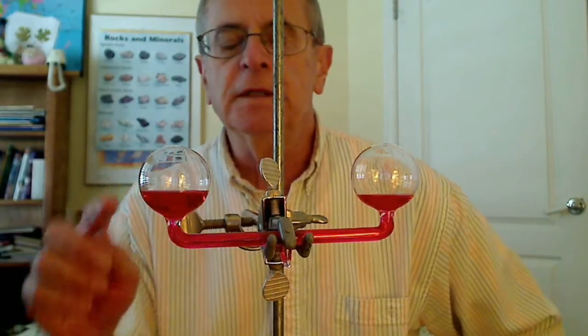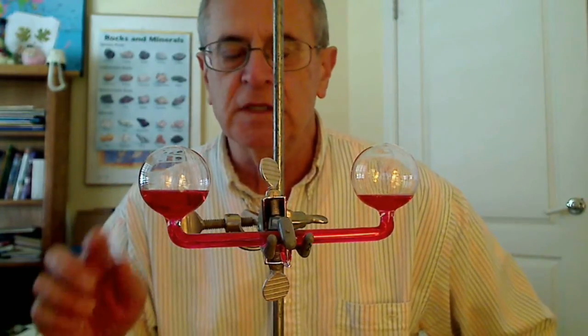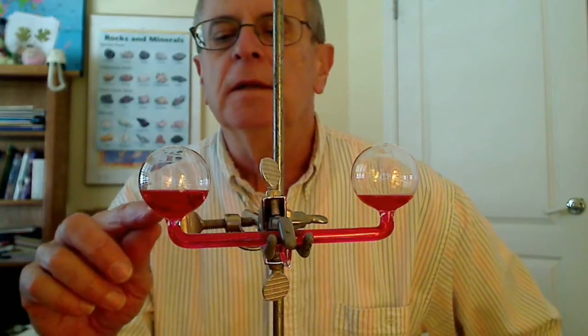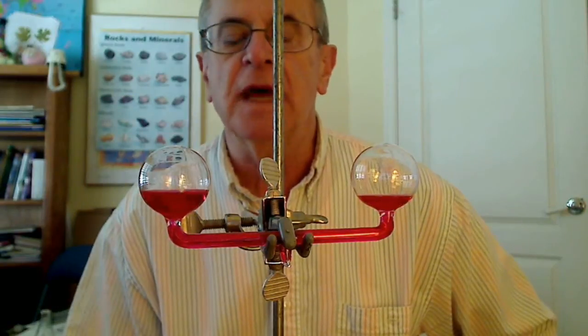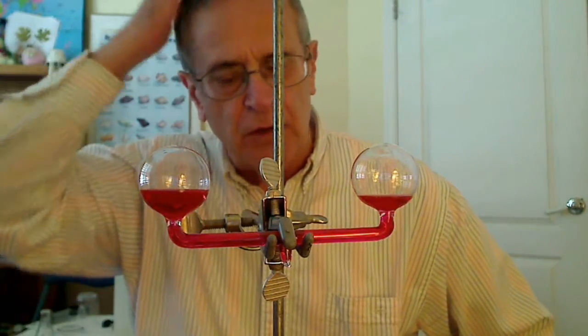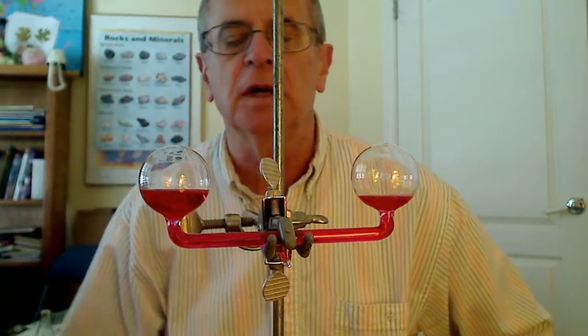It's a nice apparatus to demonstrate vapor pressure. The liquid in here, according to the box, is ethanol. Ethanol is a fairly volatile liquid. There's a dye in it to give it some color.